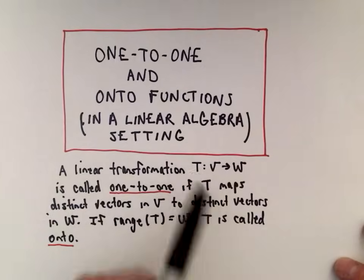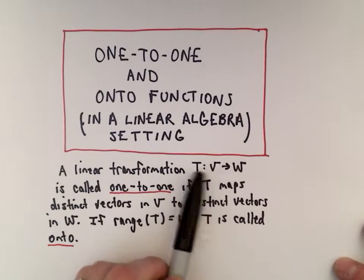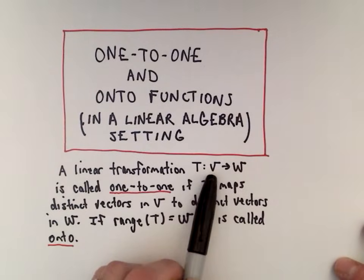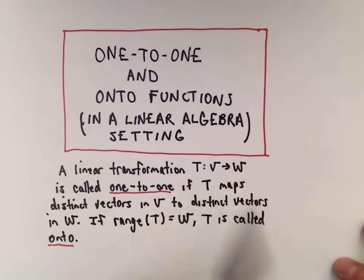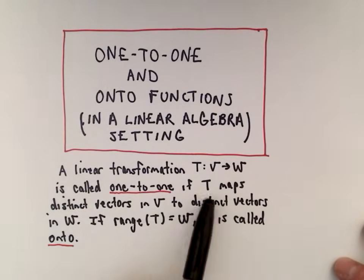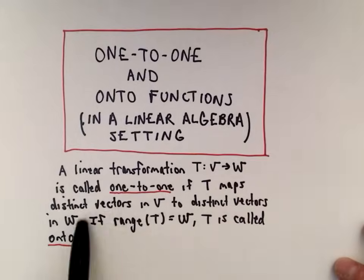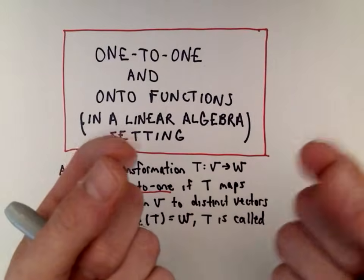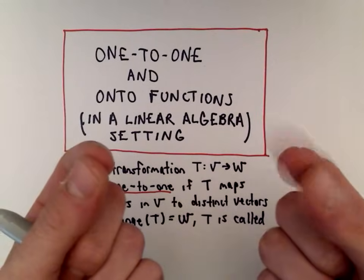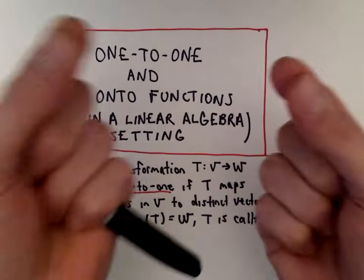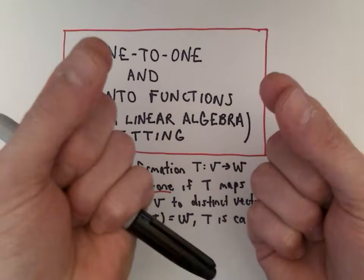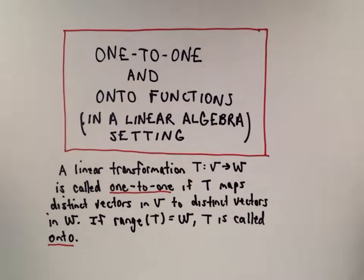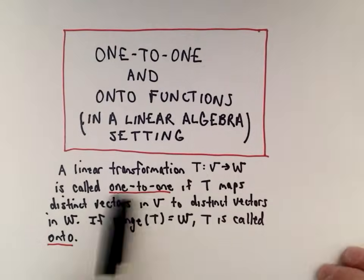A linear transformation T from vector space V to W is called one-to-one if T maps distinct vectors in V to distinct vectors in W. So if you start with two different vectors, when you apply that transformation you get two different outputs — that's all it says if it's one-to-one.